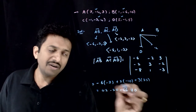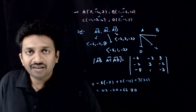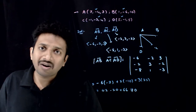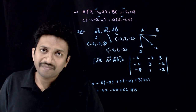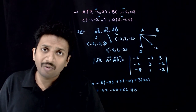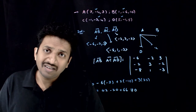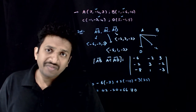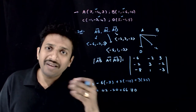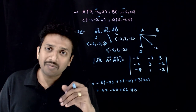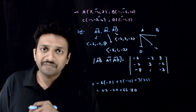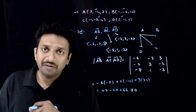This is not equal to 0. That means these four points are not coplanar. If these four points are not coplanar, obviously they cannot form a plane figure, which would be a square, rectangle, or rhombus. So the answer should be none of these. Thank you.